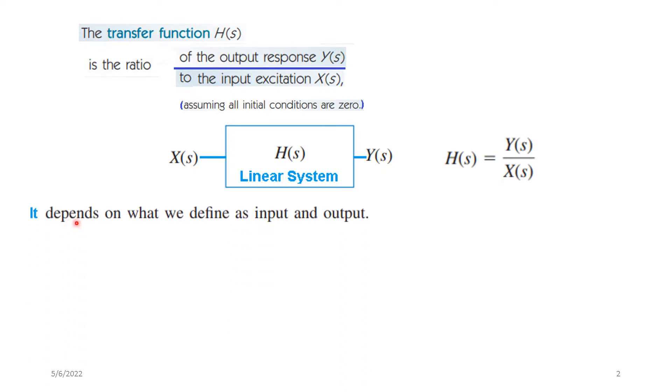Now the transfer function depends on what we define as the input and output. So depending on the different types of input and output we could have four different transfer functions. For example, if voltage output and voltage input, this is the voltage gain. If output is current and input is also current, then it will be current gain. If output is voltage and input is current, then it will be called impedance. And if output is current and input is voltage, it will be called admittance.